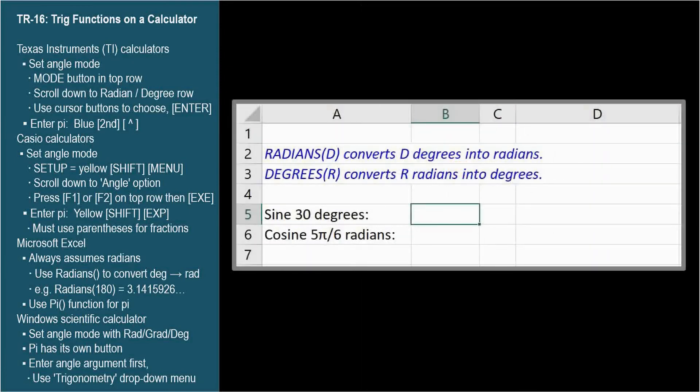Excel doesn't have a degree or radian mode. All of its trig functions expect an argument in radians. To use degrees, Excel has provided a function called radians that converts degrees to radians.